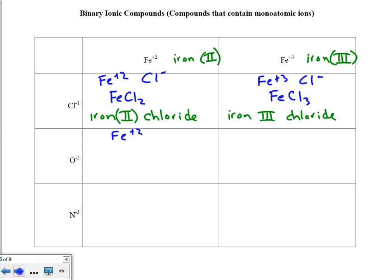Fe⁺² and O⁻². Crisscrossing, it looks like you should have Fe₂O₂, but that is a 1 to 1 ratio. So the correct formula is FeO. The name of this substance is iron 2 oxide.